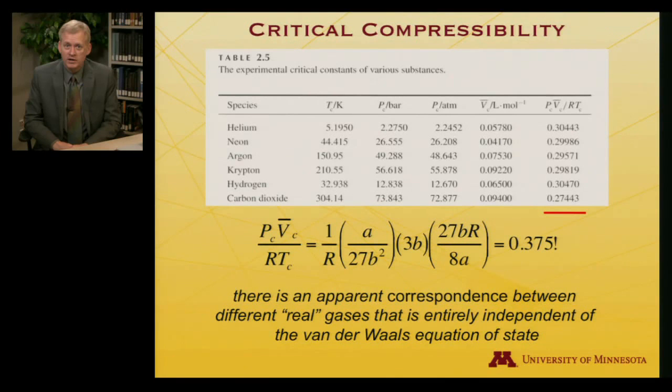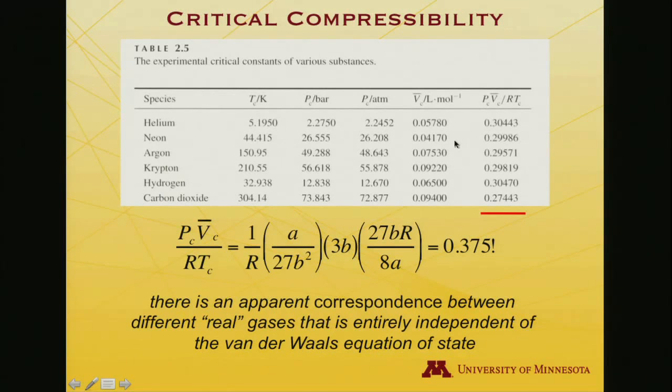I showed you this table of critical parameters - temperature, pressure, molar volume - for a variety of gases, and noted that although the individual parameters, the critical temperature or the critical pressure or the critical molar volume, was really very substance dependent, an enormous range from 5 Kelvin all the way up to 304 Kelvin for the gases on this slide.